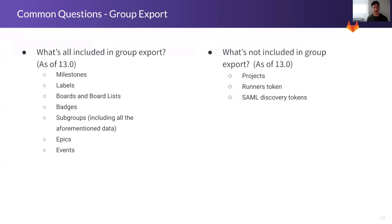Common questions customers may ask: What's included in the group export? As of 13.0, this includes milestones, labels, boards and board lists, badges, subgroups, epics, and events. What's not included? Projects, runner tokens, and SAML discovery tokens.